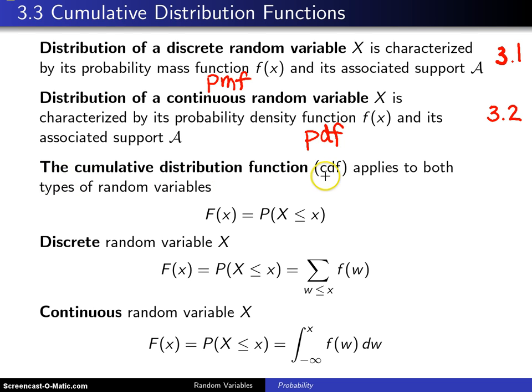The cumulative distribution function applies to both types of random variables. The nice thing here is that this particular definition, capital F(x), which is the probability X is less than or equal to x, applies to both discrete and continuous random variables.